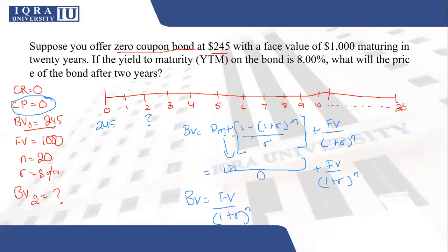Once the bond matures in 20 years, you'll get a par value of 1000. So your face value is 1000. Your interest rate is 8%. But what should be your n? Should your n be 20? Or should it be something else? You should think about this for a moment.